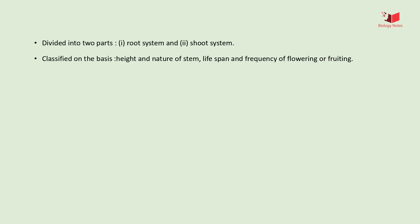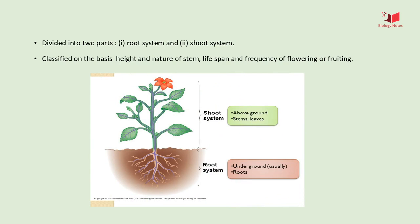The body of a flowering plant can be divided into two fundamental parts: one is the root system and the second one is the shoot system. Plants can be classified on the basis of height and nature of stem, lifespan, and frequency of flowering or fruiting. The flowering plant is also known as Angiospermia or Magnoliophyta.